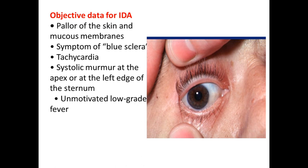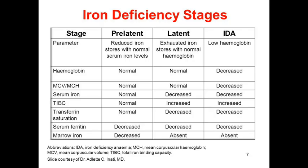Other signs include symptoms of blue sclerae and systolic murmurs at the apex and left edge of the sternum. Iron deficiency stages can be represented by different laboratory parameters. You can see that hemoglobin remains normal in the pre-latent and latent stages until iron deficiency anemia develops. Serum iron is normal in the pre-latent stage but progressively decreases as iron deficiency anemia develops.